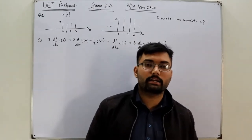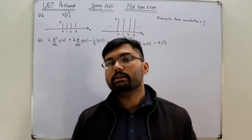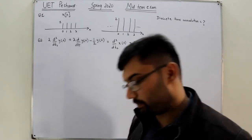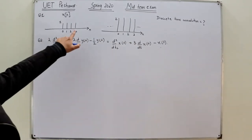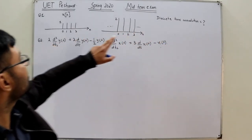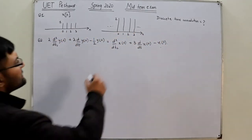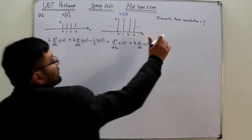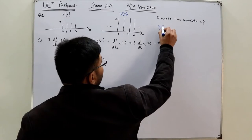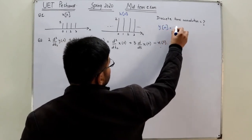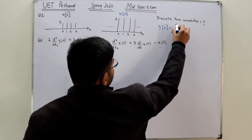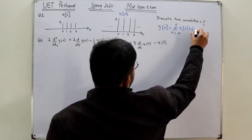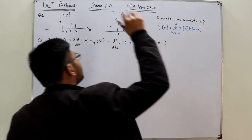Bismillahirrahmanirrahim, assalamu alaikum. This is Part B of the paper. Question number one is to find out the discrete-time convolution of two signals. X of n and H of n are given, and you have to find out y of n, where y of n equals the summation of K running from negative infinity to positive infinity of X of K into H of n minus K.